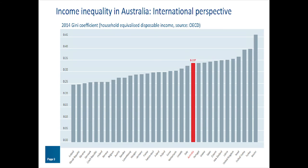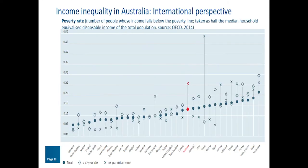Looking at the Gini coefficient of income — so instead of focusing on the top of the distribution you look at the entire distribution — you see that Australia has a relatively high level of inequality compared to other rich countries. The same goes for poverty: the poverty rate is relatively high, particularly high among those 65 and older, although here you'd have to be careful because many of them are homeowners and hence don't have to pay rent.